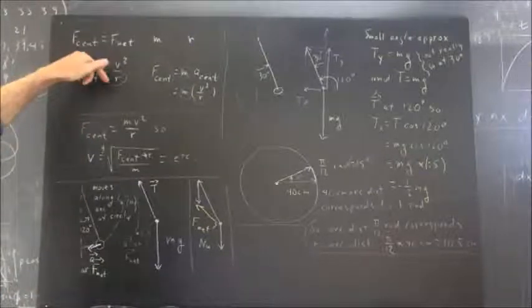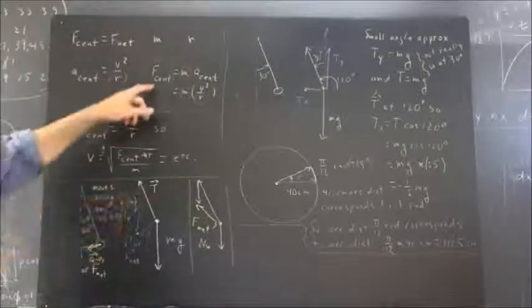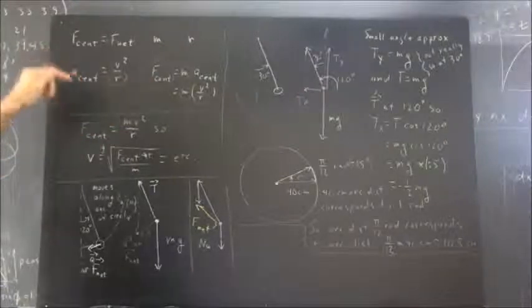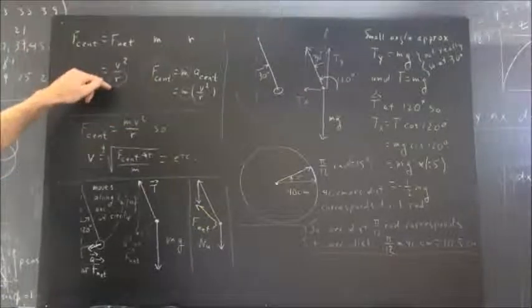So, centripetal force is V squared over R, meaning that the... I say force, centripetal acceleration is V squared over R.